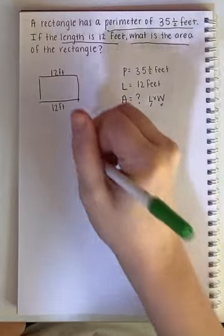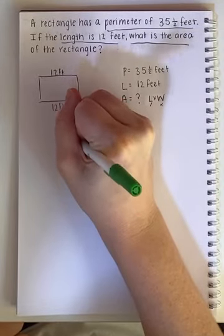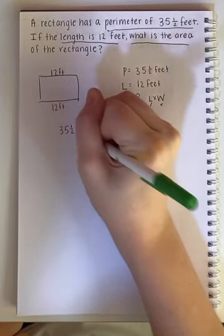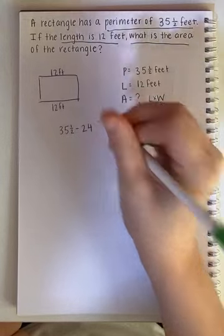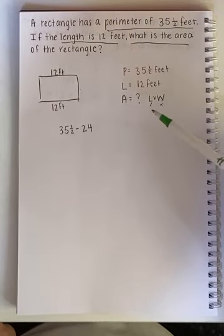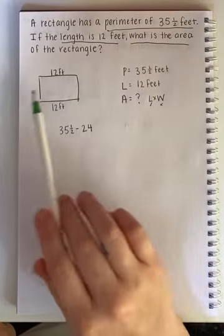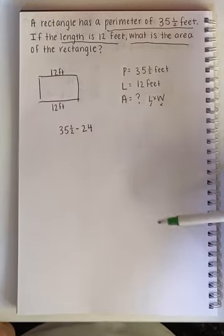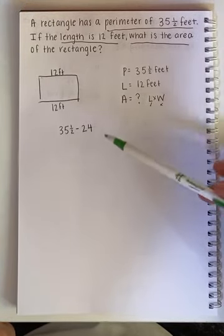So we'll do 35 and a half minus 24. That is how we can find out what these two sides together in all equal. So please pause the video and solve for that.